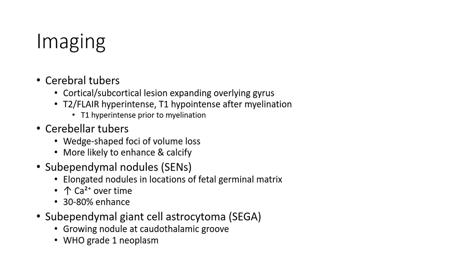Cerebral tubers may show wedge-shaped morphology or volume loss, and are more likely to enhance and calcify. Subependymal nodules appear as elongated nodules in the location of the caudal germinal matrix, with calcification increasing over time, seen in 30-80% of cases.